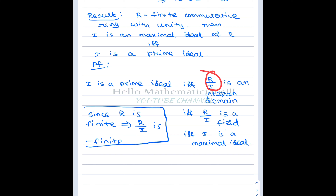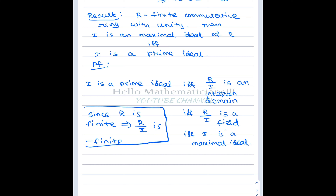R is a finite ring, therefore R/I is also a finite ring. This finite ring is an integral domain. A finite integral domain is a field — that is the crucial fact we use here. Generally, every field is an integral domain, but the converse holds only for finite integral domains. Therefore R/I is a field, and R/I is a field if and only if I is a maximal ideal.